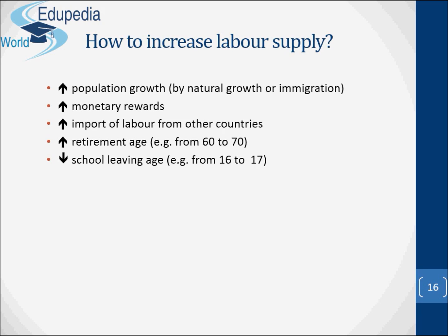How can we increase labor supply? We can increase labor supply by increasing population growth — both by natural growth or immigration — by increasing monetary rewards, increasing import of labor from other countries, increasing retirement age (for example, from 60 to 70), and by decreasing the school leaving age (for example, from 16 to 17).